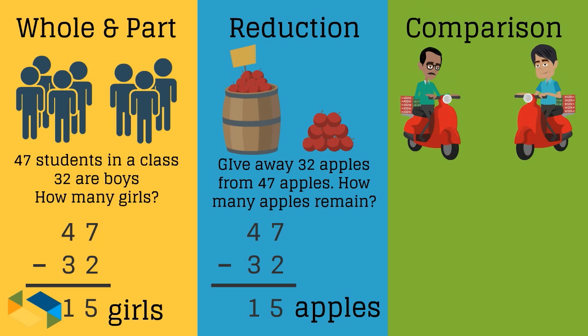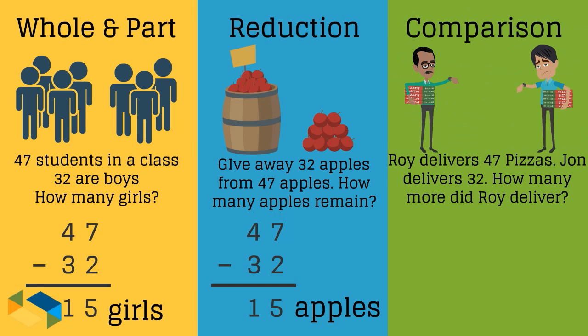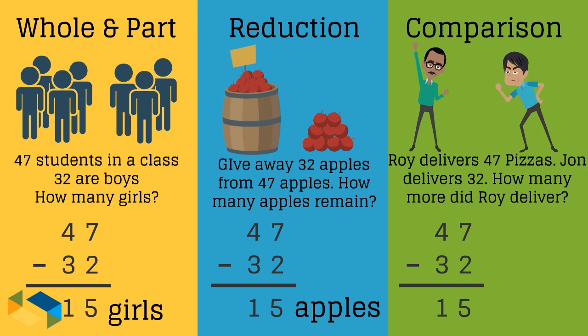Lastly, when we have to compare two numbers or have to match up one number to another, we use subtraction. For instance, say Roy delivers 47 pizzas and John delivers 32. How many more pizzas did Roy deliver? We have seen what 47 minus 32 is, so the answer is 15 pizzas.